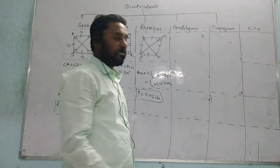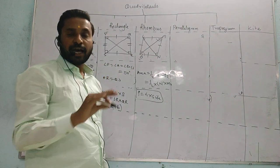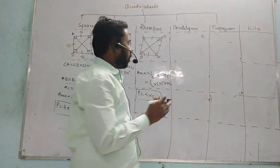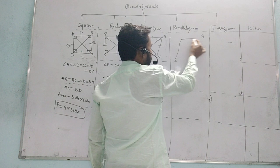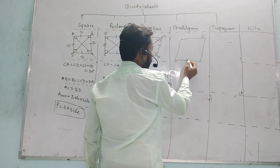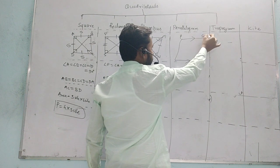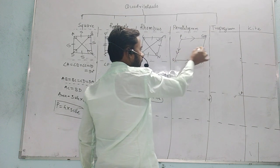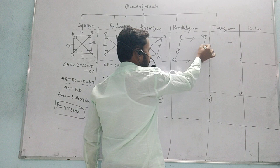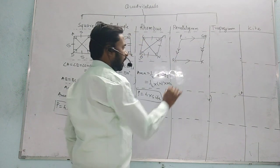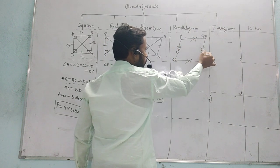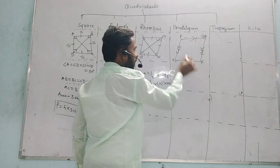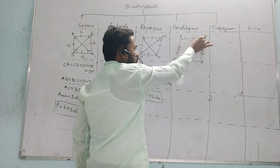Next one is parallelogram. Square, rectangle and rhombus are all types of parallelograms. The first property of a parallelogram is that opposite sides are equal and parallel. In parallelogram PQRS, PQ is parallel to SR and PQ is equal to SR. Similarly, PS is parallel to QR and PS is equal to QR.